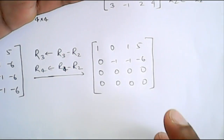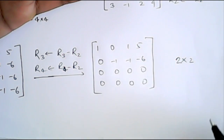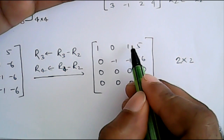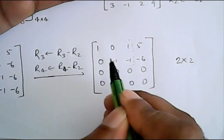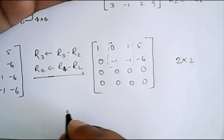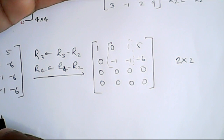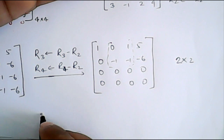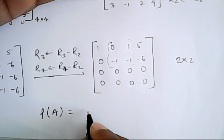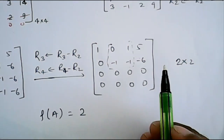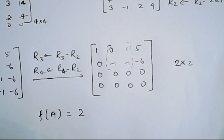Now the only possible minor is 2×2, which is not equal to 0. The minor equals 1, so the rank of matrix A is equal to 2, because we have a 2×2 minor which is not equal to zero. In a similar fashion we can find the rank of any larger matrix. Thanks for watching.